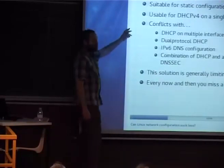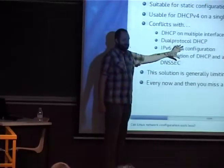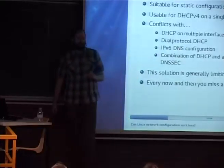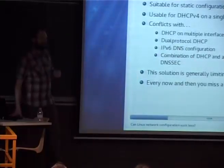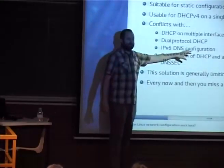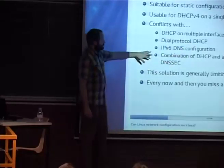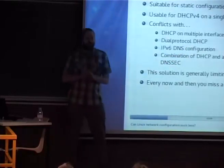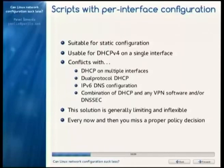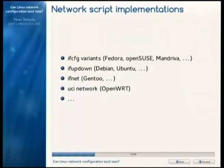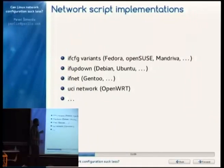The biggest problems arise when you want to do DHCP on several interfaces, or when you want IPv6 auto-configuration with DNS alongside DHCPv4 simultaneously — you get all sorts of conflicts. Regardless of whether you're using IPv4 or IPv6, the DNS configuration is shared, which is a fundamental limitation.